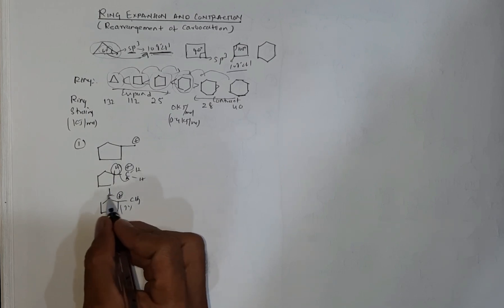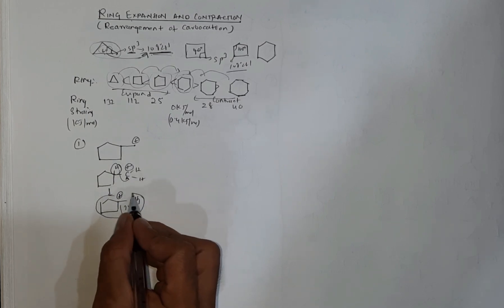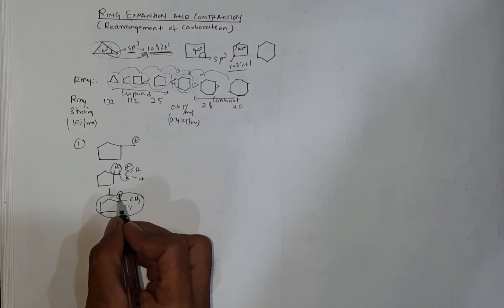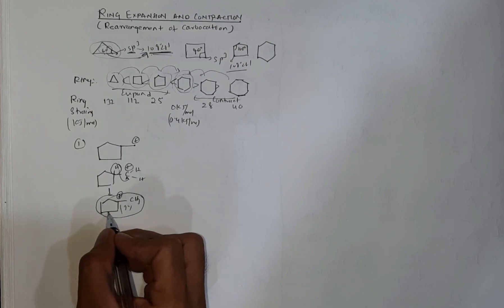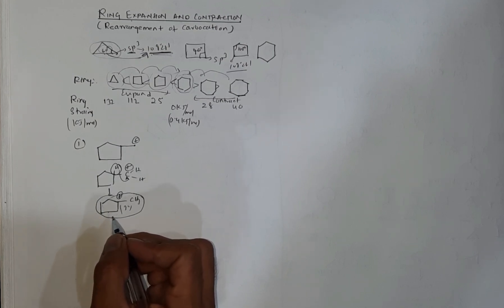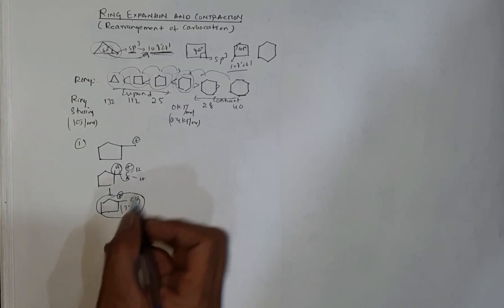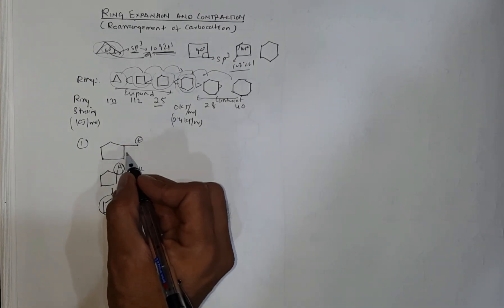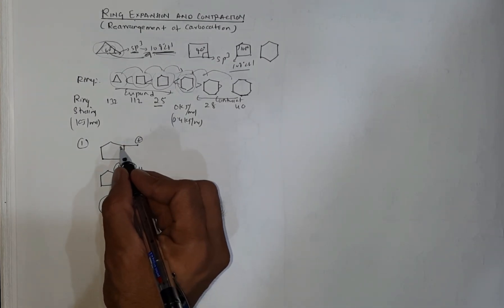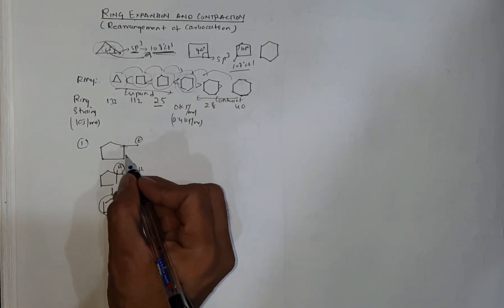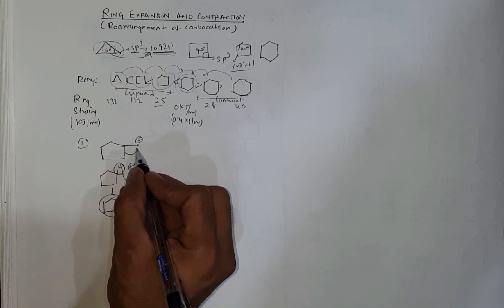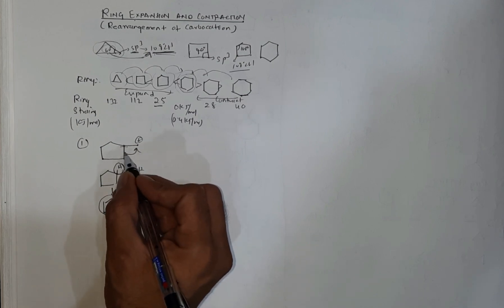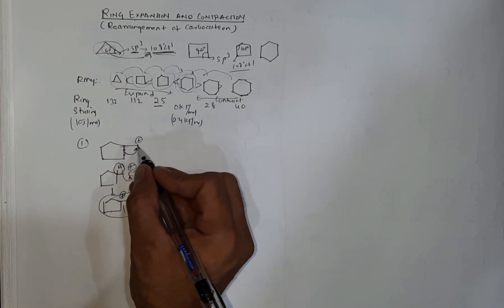However, this hydride-shifted structure is not very stable, because the positive charge is still carried by the cyclopentane ring, which has a little bit of angle strain. But if you shift an entire C–C bond — shifting that pair of electrons entirely onto the adjacent carbon atom — the structure changes significantly.